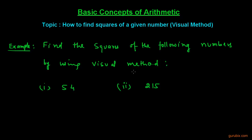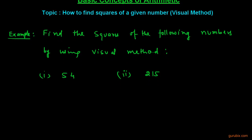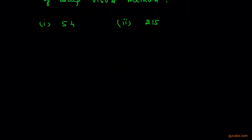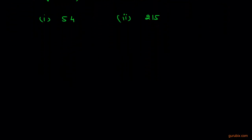This example has two parts. In part 1 we are given the number 54, and in part 2 we are given 250. We have to find the square of these numbers by using the visual method. Let us see how to find the square of these numbers.